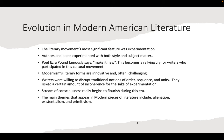The literary forms of modernism are innovative and often challenging. This is where we get the idea that the author doesn't have to hold the reader's hand — they can expect readers to do some work to ascertain the meaning behind the work. Writers were willing to disrupt traditional notions of order, sequence, and unity, and okay with their work being a little incoherent or confusing for the sake of experimentation. Stream of consciousness really begins to flourish during this era — authors like William Faulkner really perfect this art.